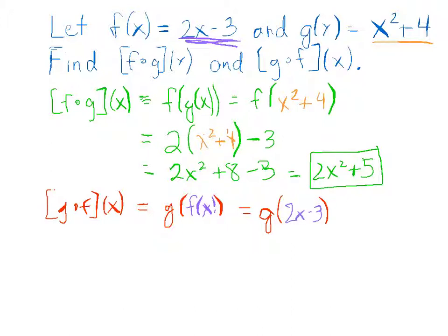All right, so let's do the substitution here. This one's going to be a little bit more difficult because we are going to have to actually square the function, which, as some of you may remember, requires more than just squaring the 2x and squaring the negative 3. It is called foiling, my friends.